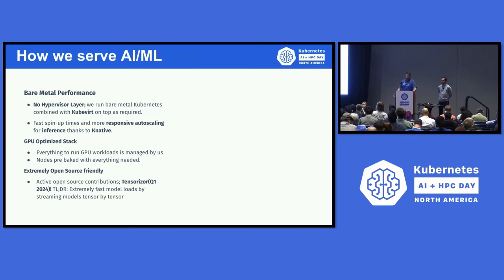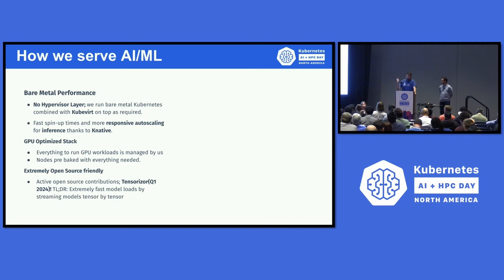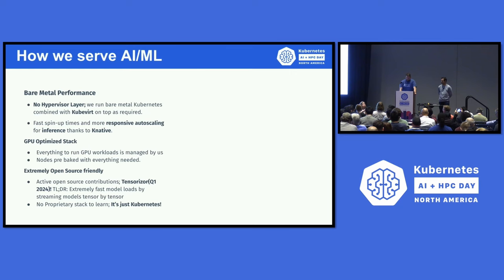We're open source friendly. Everything we do is basically represented at KubeCon. You don't have to learn anything new. And I do want to note Tensorizer, which is a really incredible open source project — we're going to open source that soon. It allows us to basically stream models directly into GPU memory. Wes Brown in the front here is one of the lead engineers on that, and he'll be happy to talk more about that this week. Come by our booth to learn about it. It's just Kubernetes. We love Kubernetes.